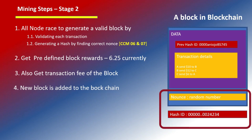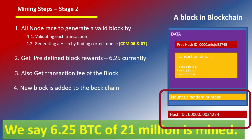A random number — called a nonce — is used, and when a valid hash ID is generated starting with the required number of zeros (about 20 leading zeros), that particular random number is the valid nonce. The hash ID is generated, and that block is confirmed as a valid block.